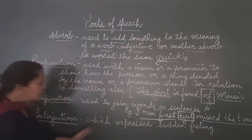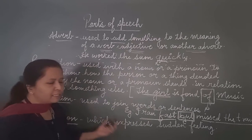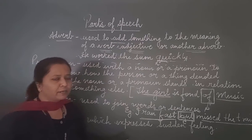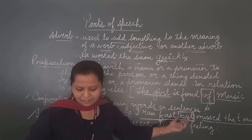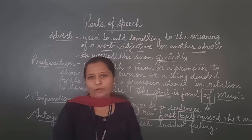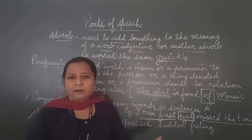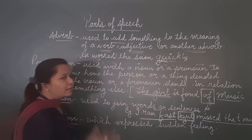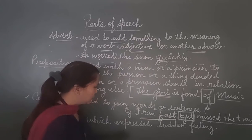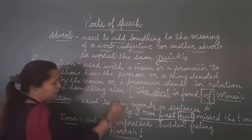Now come to the last part of speech, and that is interjection. An interjection is a word which expresses sudden feelings. For example, if you have gone out to play a match and you enter the class with sudden joy, you say: 'Hurrah! We have won the match.' So 'Hurrah!' with an exclamation mark becomes the interjection.